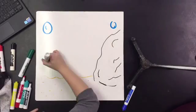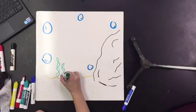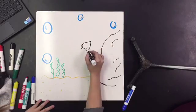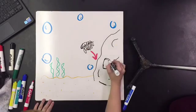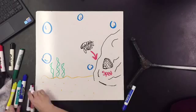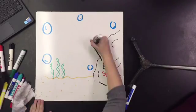The pedi veliger then finds a hard substrate to land on. When it lands on the substrate, it grows more of a shell, becoming a spat.